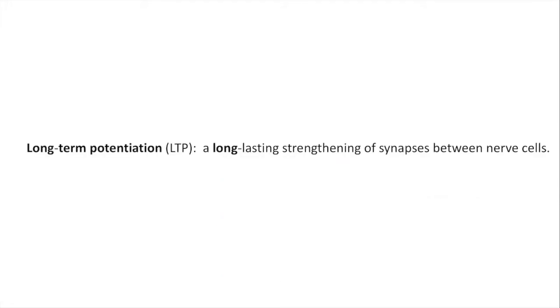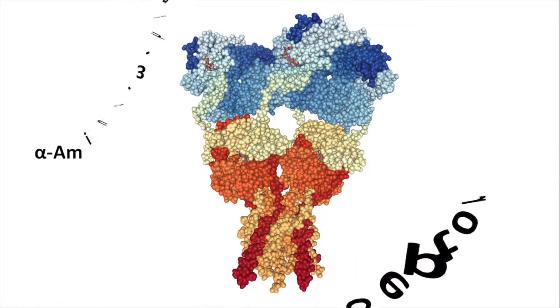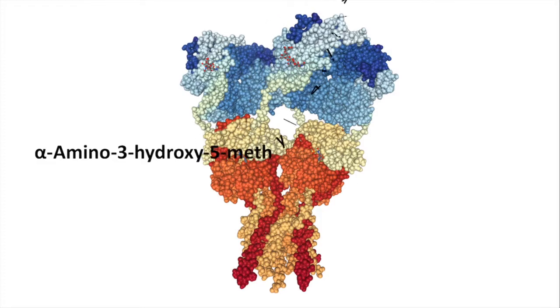Long-term potentiation is a long-lasting strengthening of synapses between nerve cells. I will be explaining what that is in this video and explain the importance of a protein called AMPA receptor, also known as alpha-amino-3-hydroxy-5-methyl-4-isoxazole-propionic acid receptor.